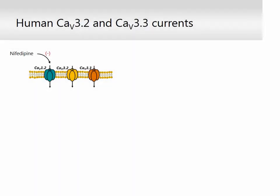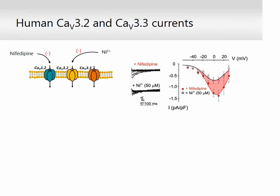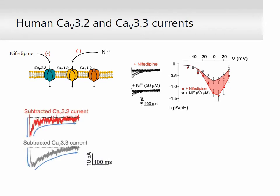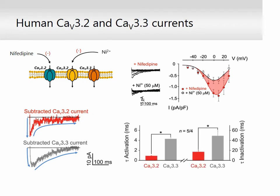The T-type current represents influx through both CAV3.2 and CAV3.3 channel pores. To separate both currents, we employed the divalent cation NiCl2 at a concentration that selectively inhibits the CAV3.2 channel. Application of 50 micromolar NiCl2 partially suppressed T-type current in human cerebral arterial smooth muscle. Subsequent kinetic analysis of subtracted T-type currents—sensitive or insensitive to NiCl2—confirmed successful separation of a T-type current predominated by CAV3.2 channels, with NiCl2-sensitive current exhibiting faster activation and inactivation profiles.